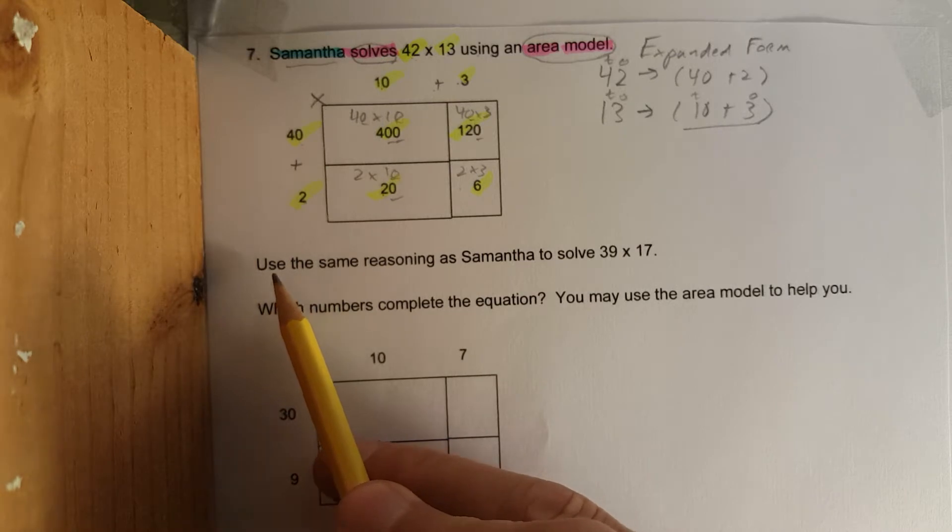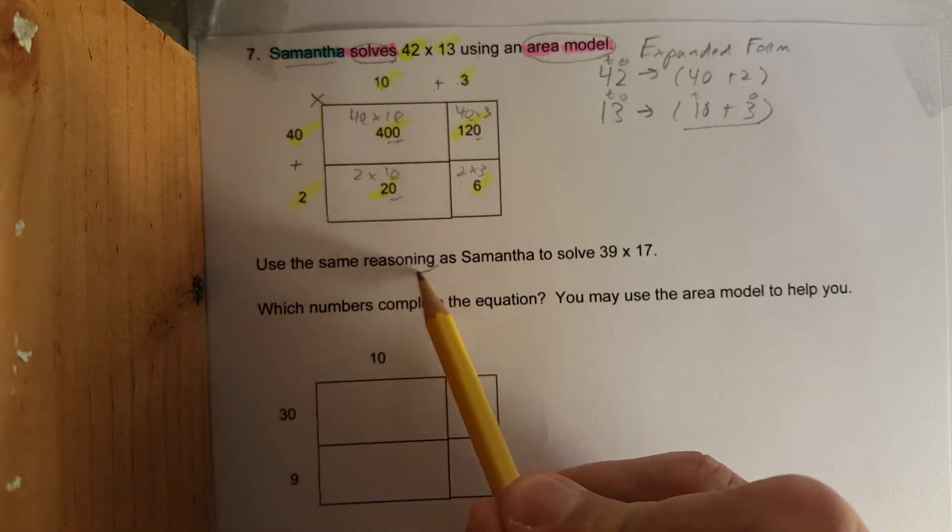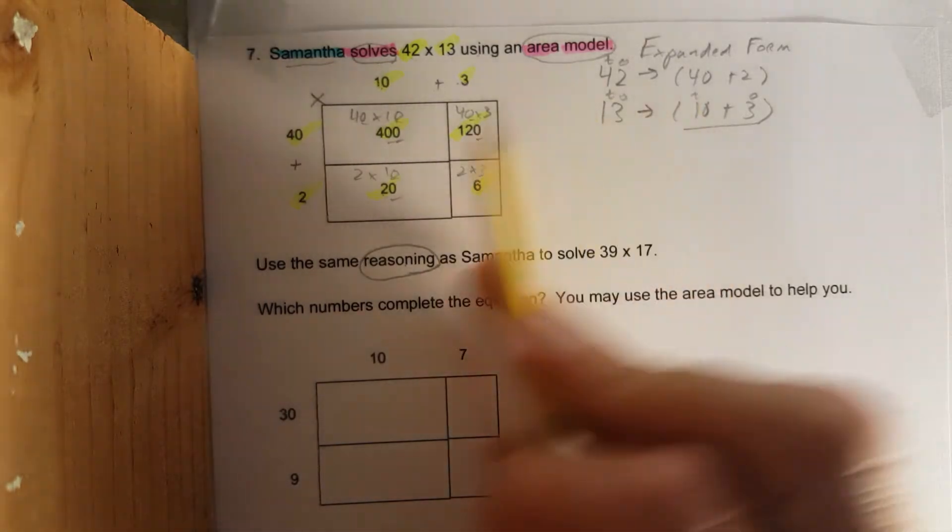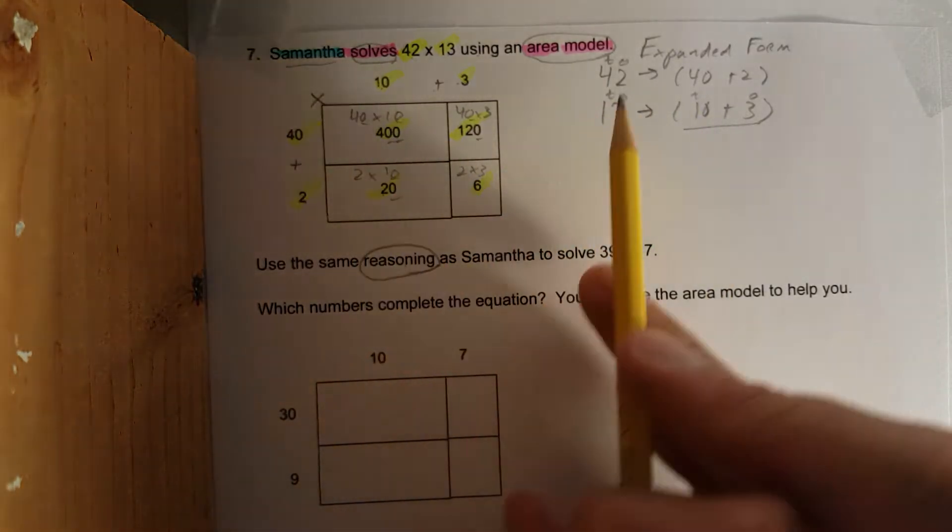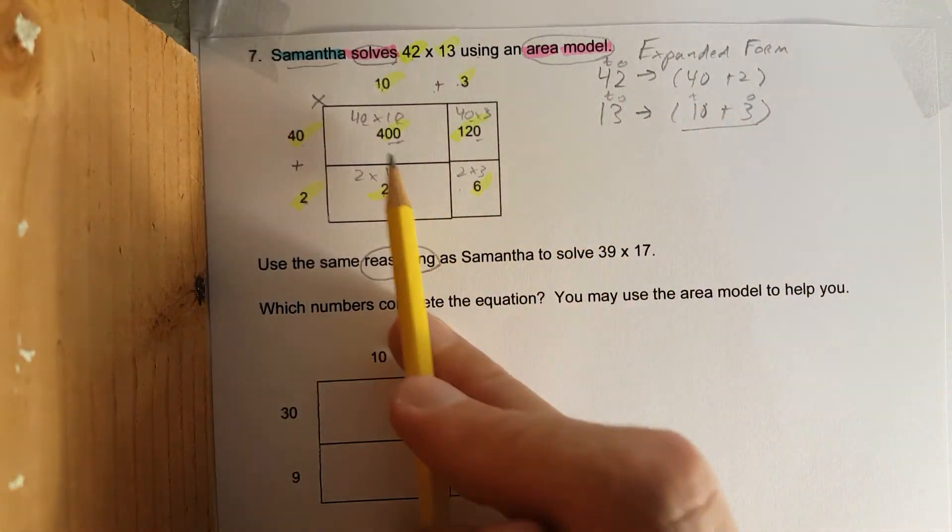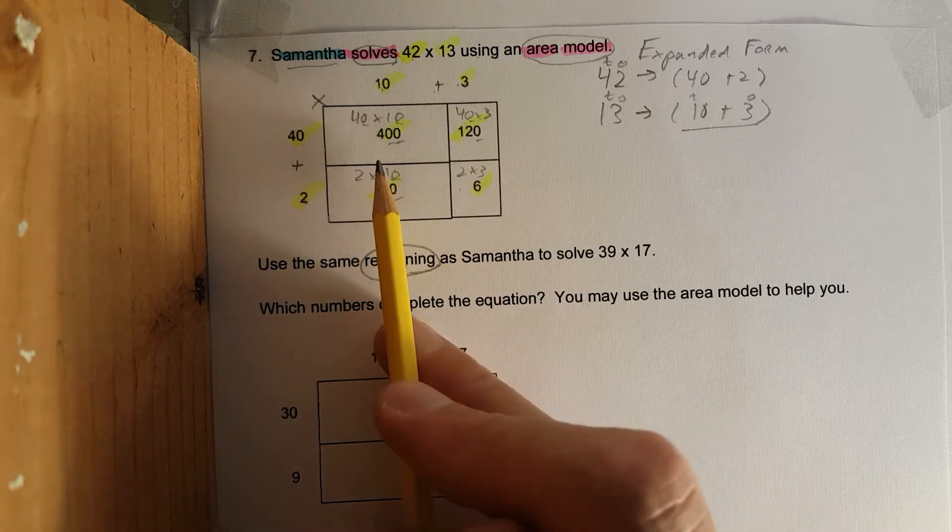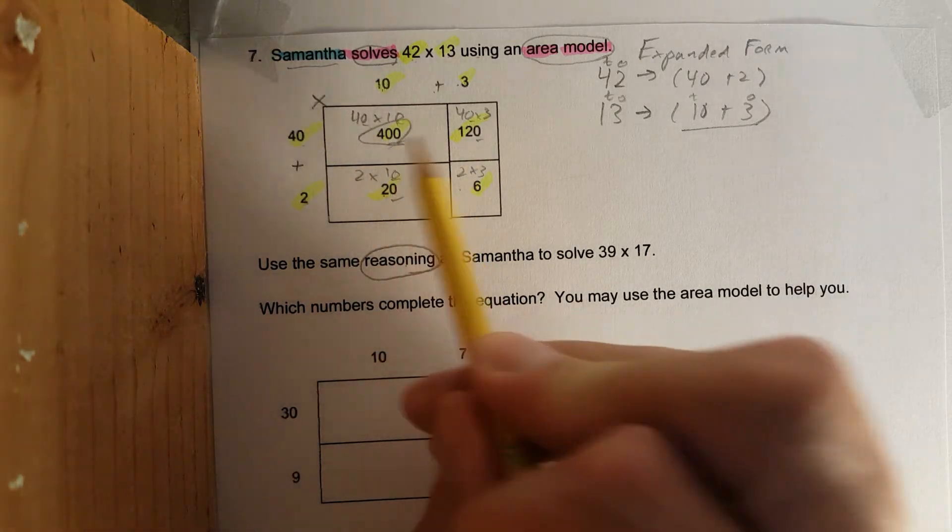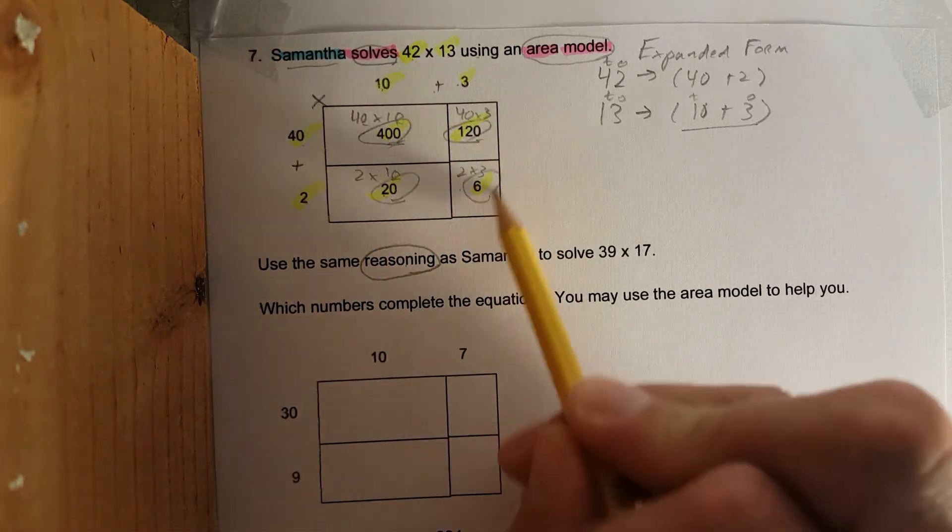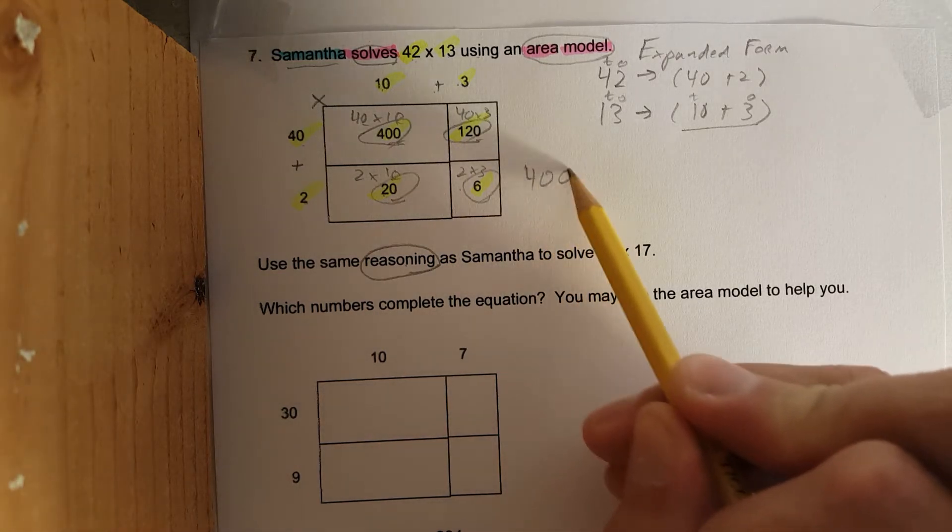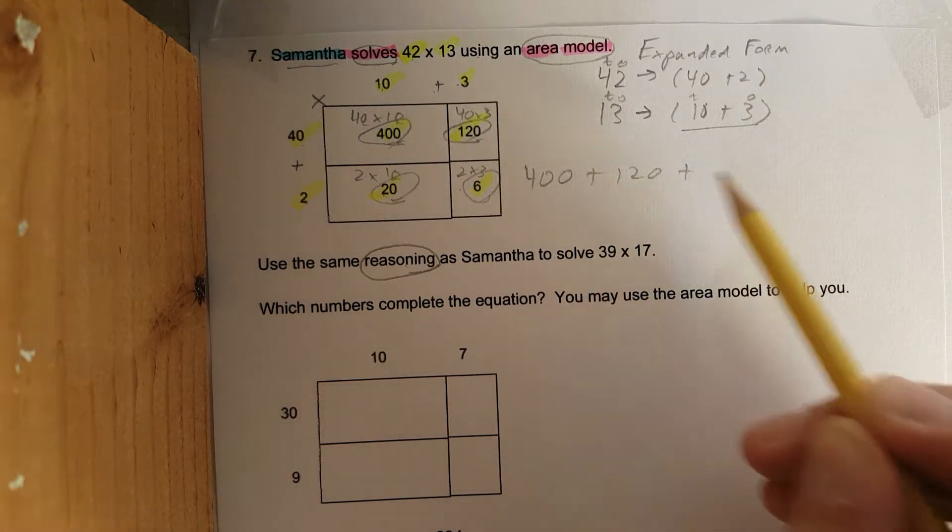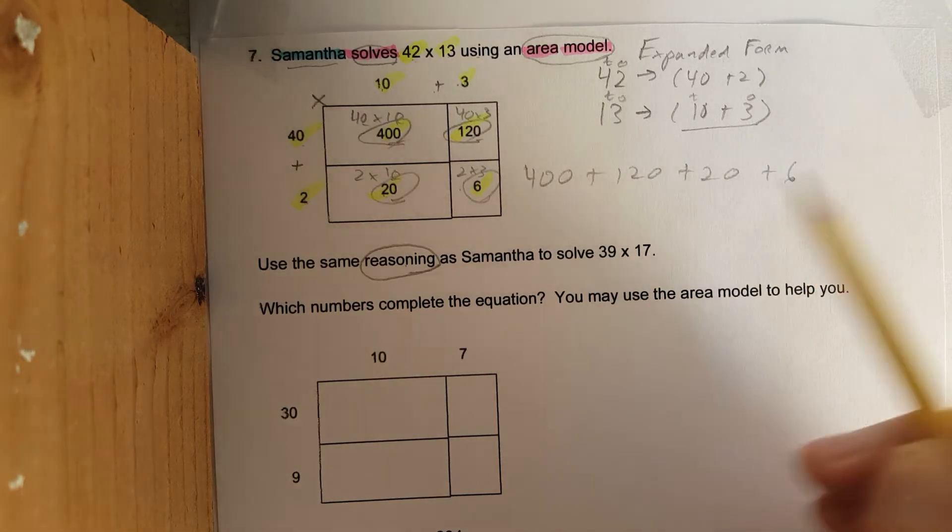Next step: use the same reasoning. Reasoning is what I just did right there with you. I talked it out, went to expanded form, multiplied it, did each box. This equals 400, this is 120, this is 20, this is 6. This could be written as 400 plus 120 plus 20 plus 6.